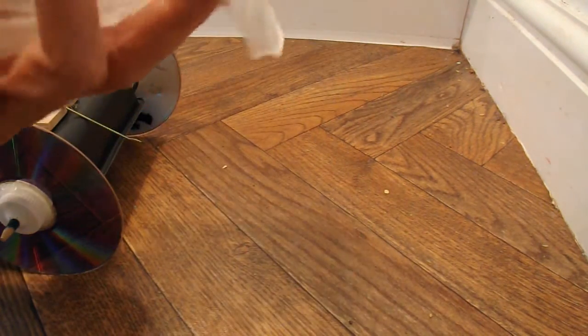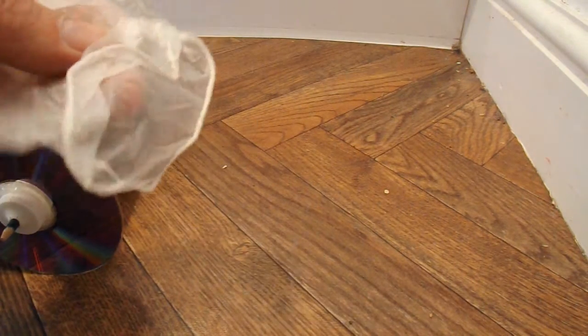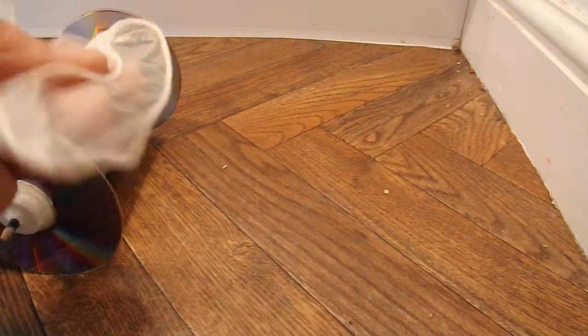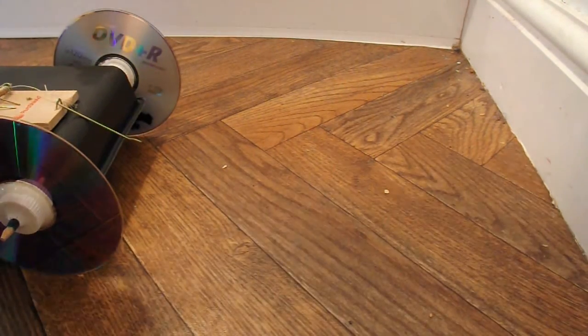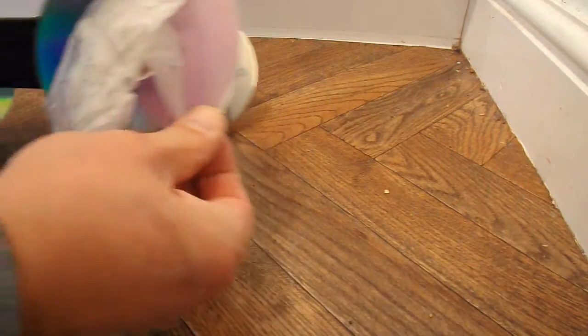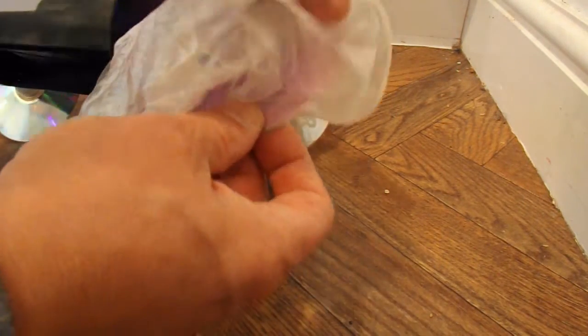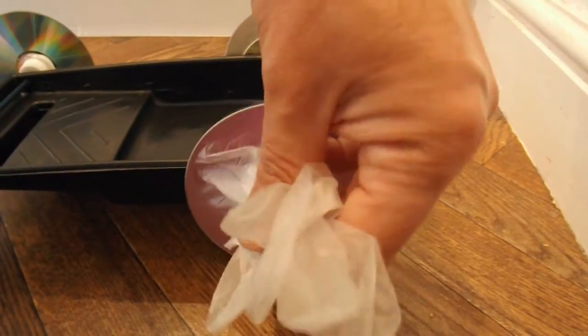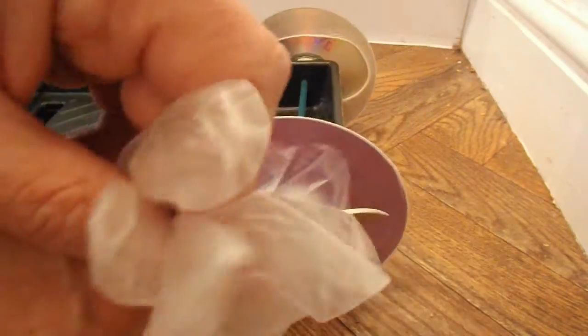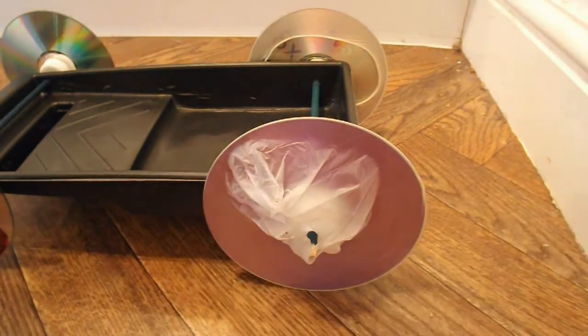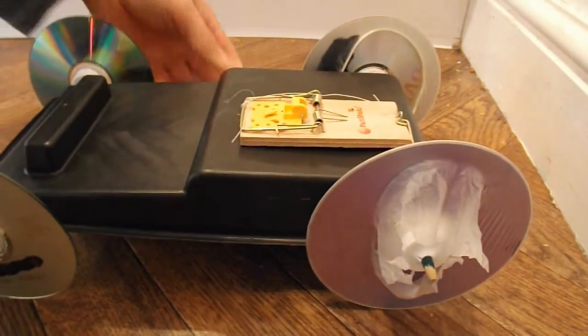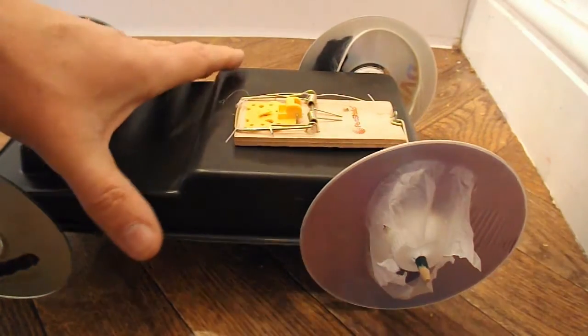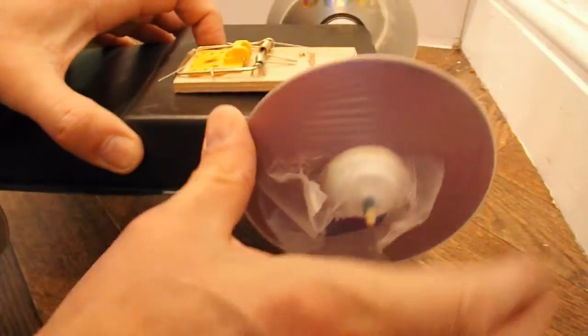Right, what I'm going to use is these latex gloves. They come from my bargain store. I think you get about 200, 250 for a pound or something like that. They're very cheap. I'll just stretch it over the back wheel. That was a bit easier. OK, so now we've got latex tyres. Let's try and wind it up again.